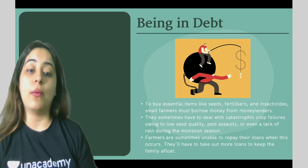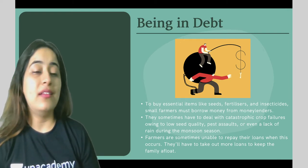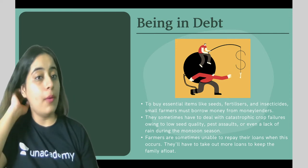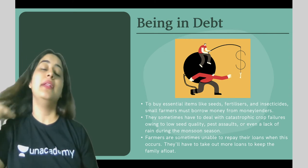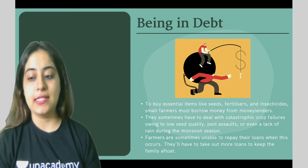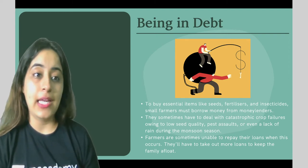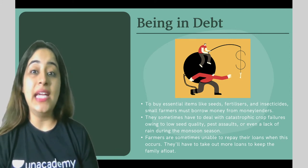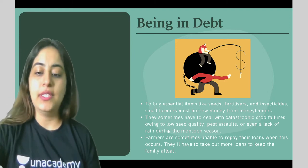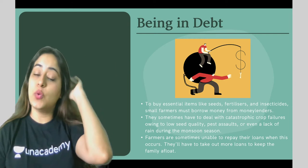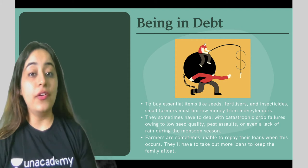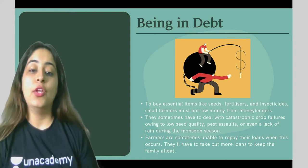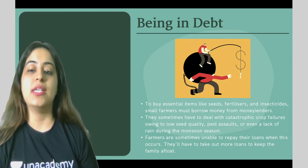Sometimes farmers have to deal with catastrophic crop failures. Because of weather or other reasons, crops can get completely destroyed or don't grow properly. This can be due to poor seed quality, pest assaults, or lack of rain — if the monsoon season doesn't bring enough rain, crops don't grow properly. These are some of the reasons small farmers face crop failures.